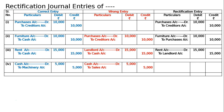The rectification entry: sales account debited to machinery account 5,000. The sales which was by mistake credited is now debited to nullify the effect, and machinery account which was not written is now credited. Being sale of machinery wrongly recorded in sales book, now rectified. The rectification journal is totaled and both debit and credit columns equal Rs. 40,000 each. This is the final answer.